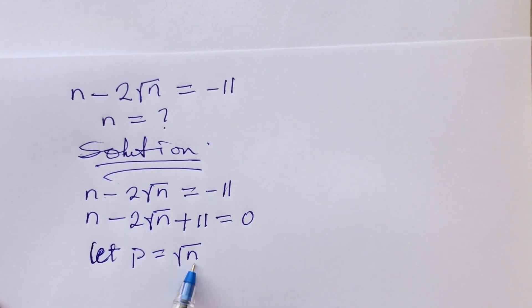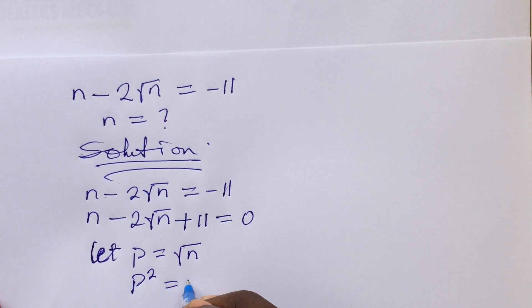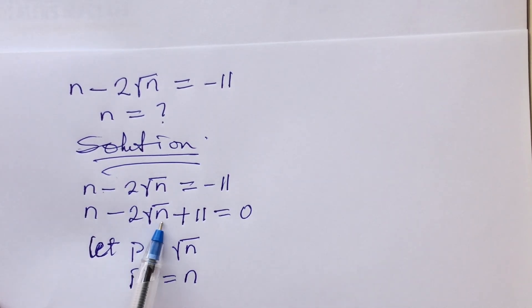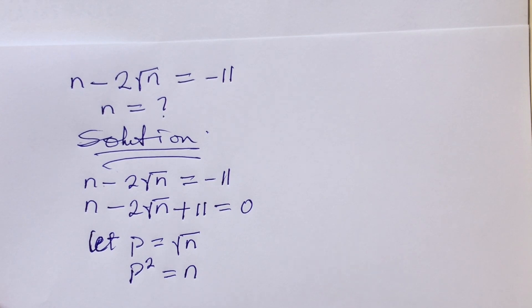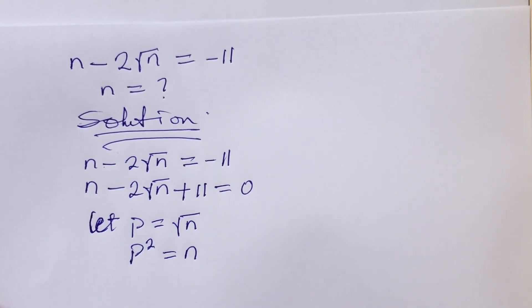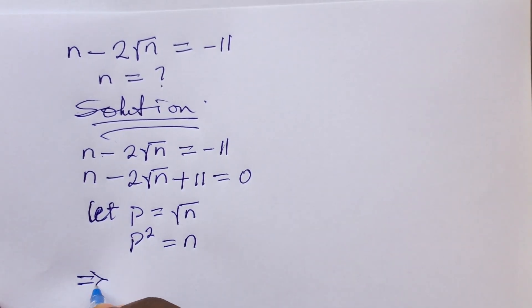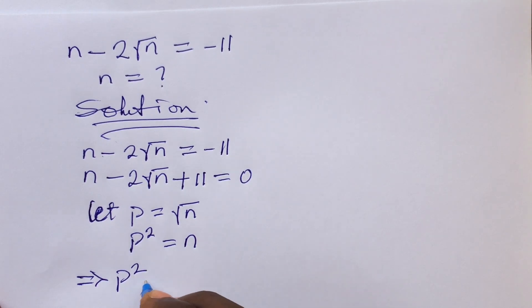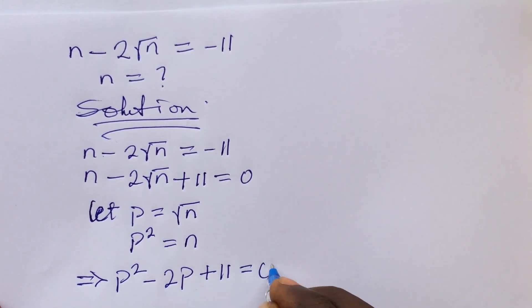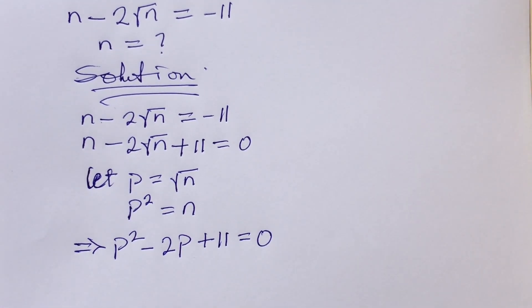We make n the subject by squaring both sides, giving us p squared equals n. We do this because we have both n and the square root of n in the equation. Substituting these, our original equation becomes p squared minus 2p plus 11 equals zero.